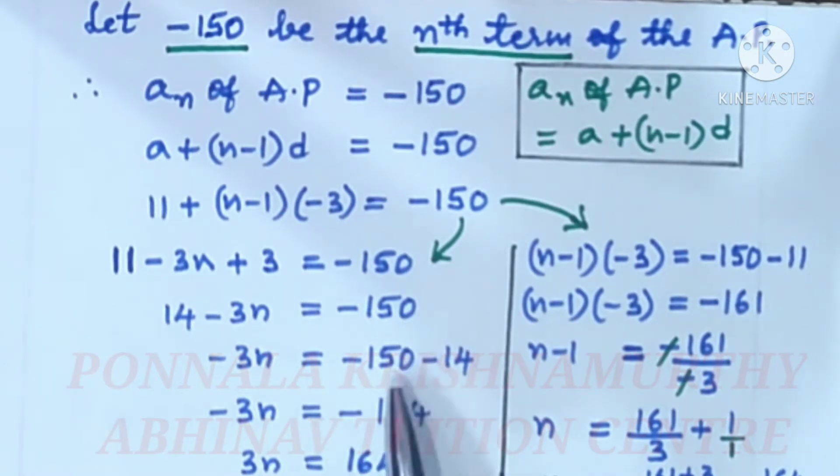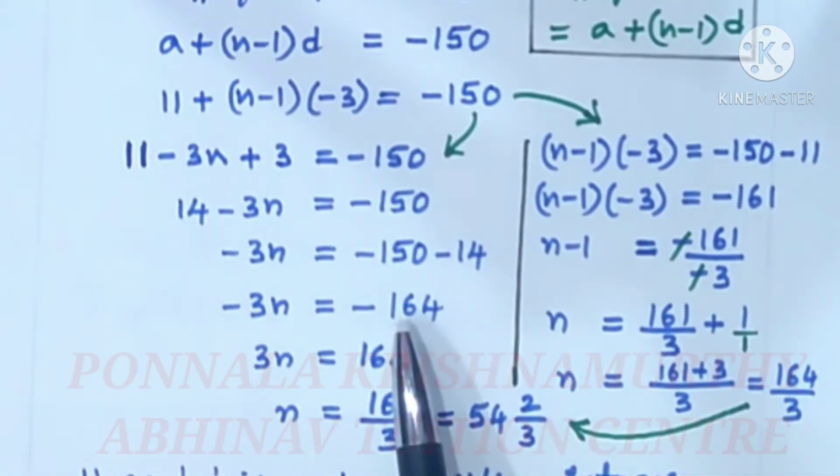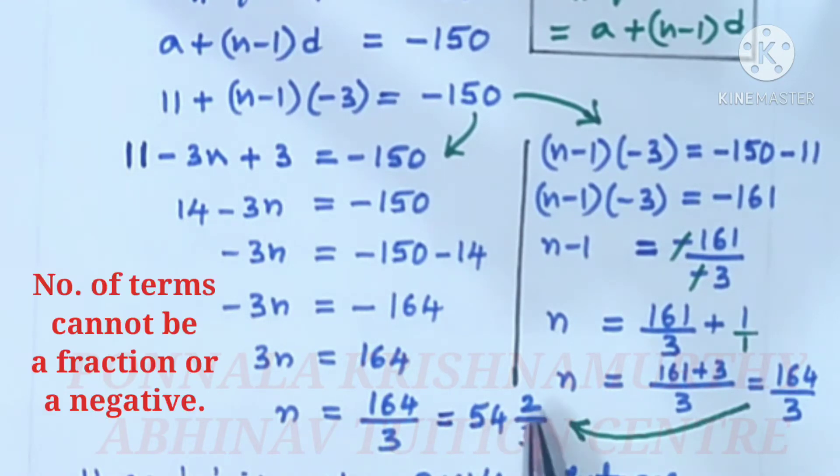Minus 3n is equal to minus 150, plus 14 becomes minus 14 here. Now, minus 3n is equal to same sign addition, that is minus 164. Don't say minus minus cancel. 3n is equal to 164. n is equal to 164 by 3. We cannot cancel 164 by 3, so we will get 54⅔.